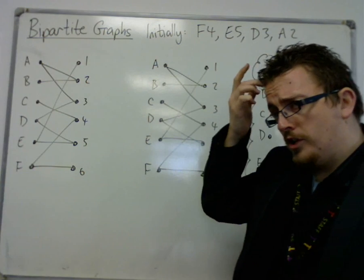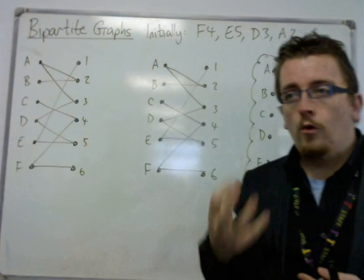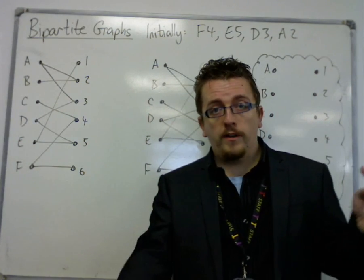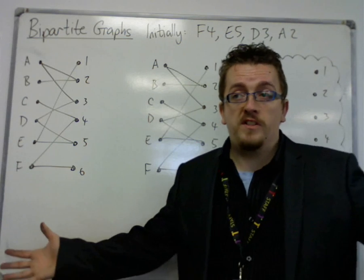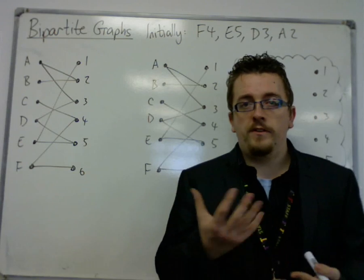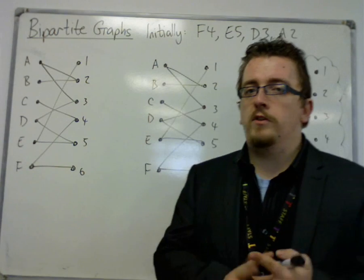So I've done this extra example to show how the alternating path algorithm works when you have two workers unmatched and two tasks unmatched. I've always been using workers and tasks in these videos, but it's not necessarily going to be that.